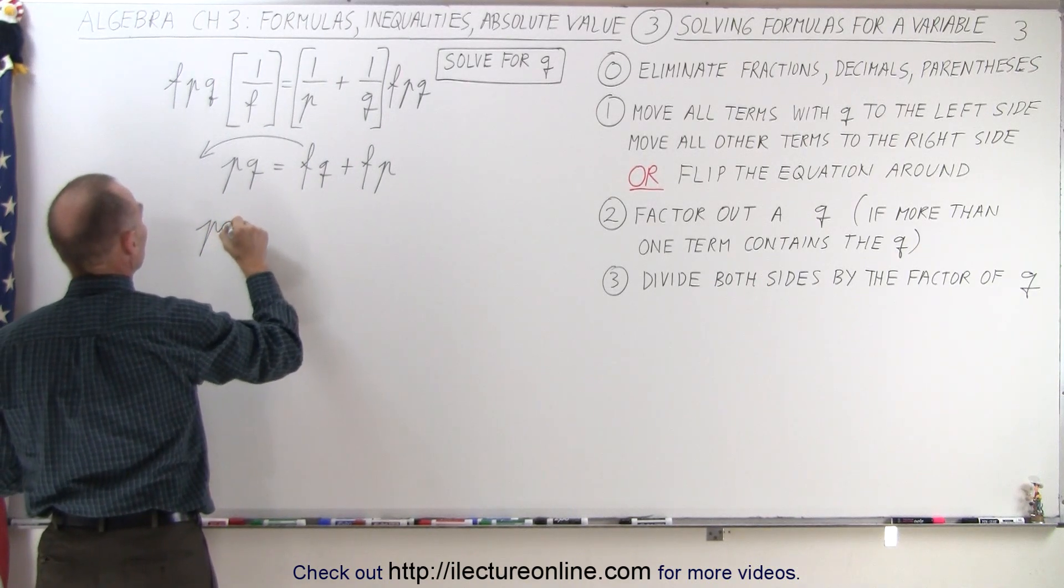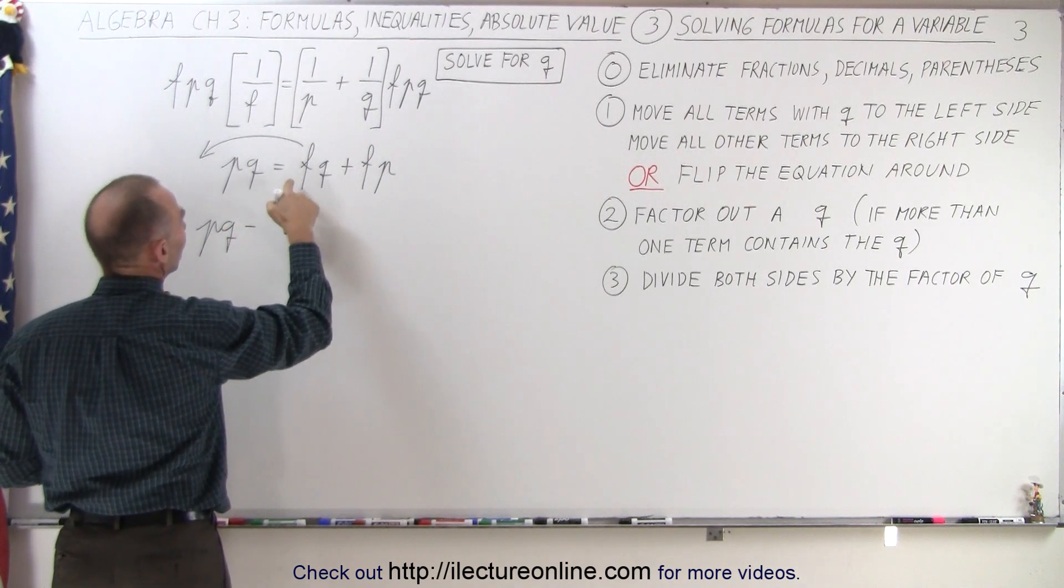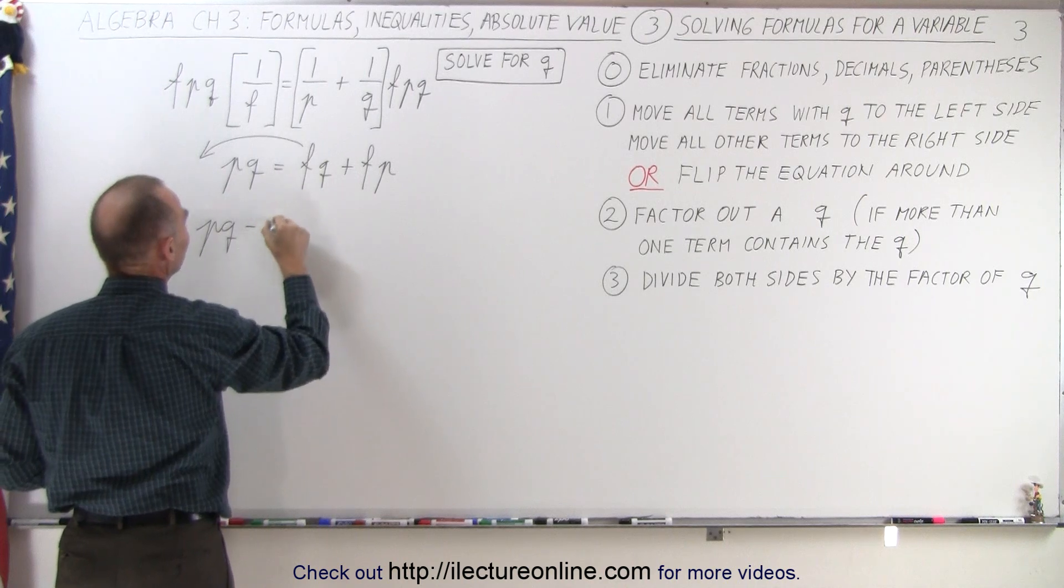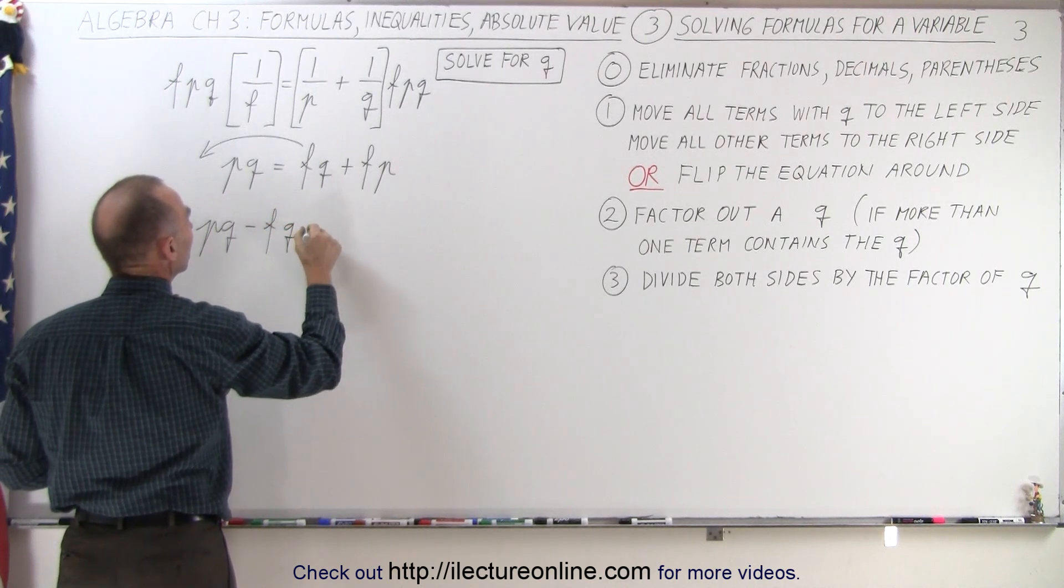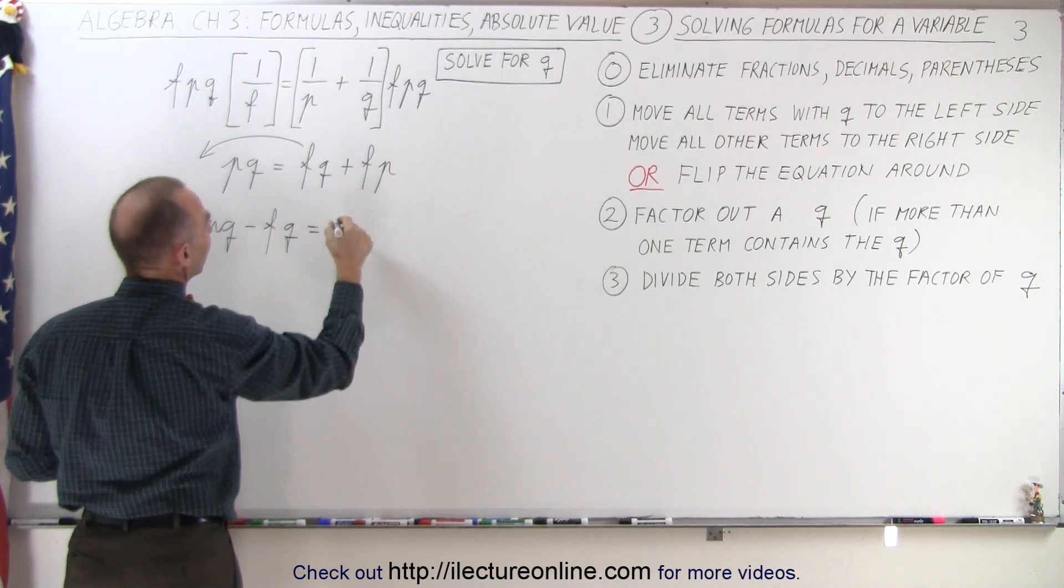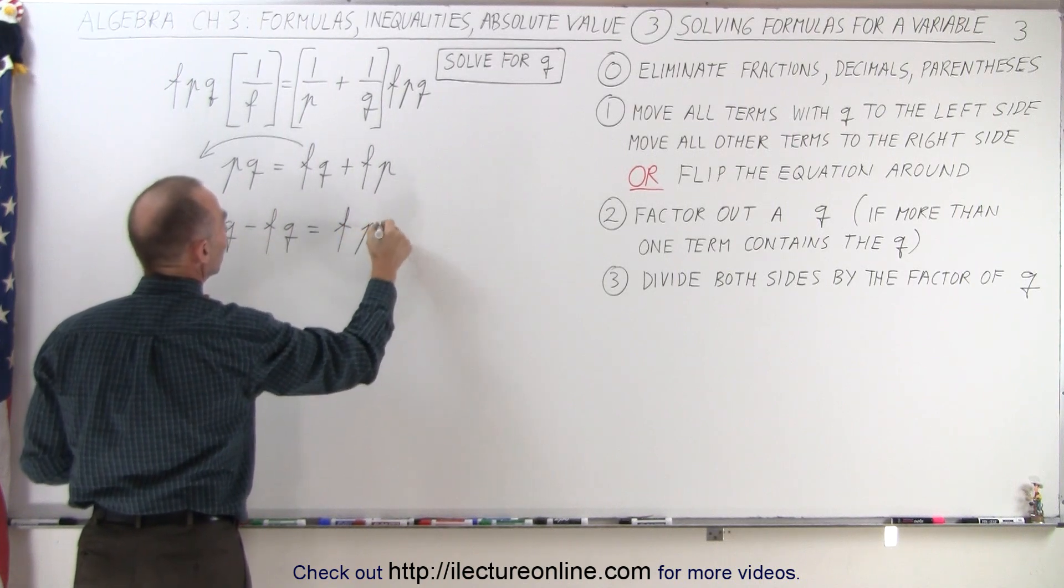So we end up with P times Q minus, because when this goes to the left side, it becomes a negative, F times Q is equal to what remains on the right side, F times P.